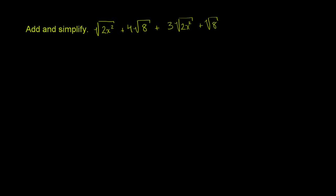Right over here I have a principal root of 2x squared, and over here I have three principal roots of 2x squared. If I have one of something here and three of something here and I add them together — I could put a one coefficient out here to make it clear — this is one of this thing and I have three of these things. So I'm going to have four of those things: 4 times the principal root of 2x squared.